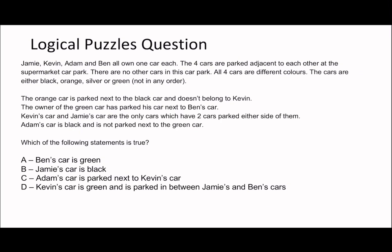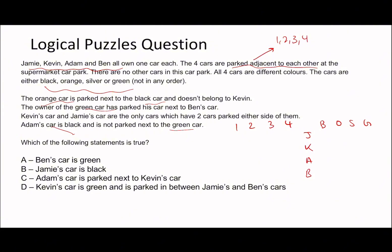This next question looks like you can't use any previous methods, but it's actually a two-way table in disguise. There are four people, each with a different color car, parked adjacent to each other. So we can assign positions one to four. The variables are the colors — blue, orange, silver, green — and the names: Jamie, Kevin, Adam, and Ben.